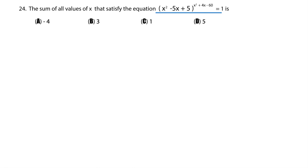So how do you approach this? We got x squared minus 5x plus 5, and then the exponent is x squared plus 4x minus 60, and this is equal to 1.